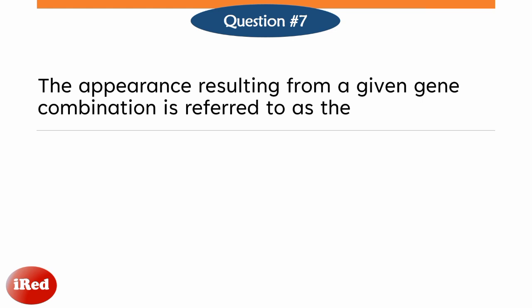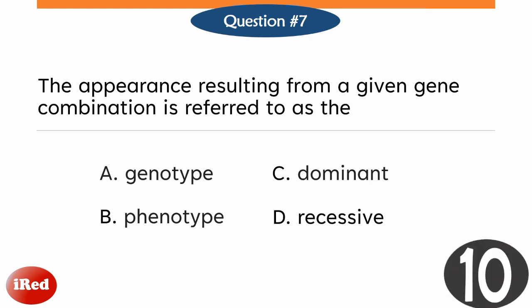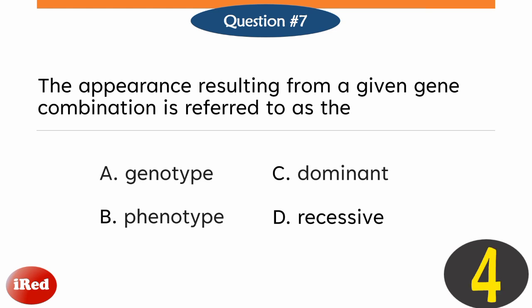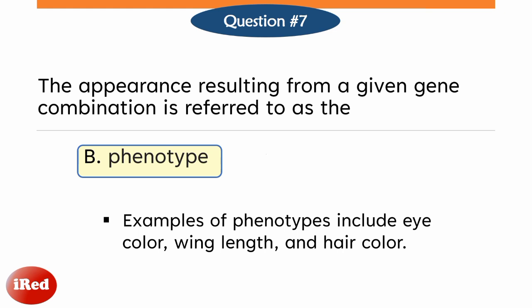The appearance resulting from a given gene combination is referred to as: A, genotype; B, phenotype; C, dominant; or D, recessive. The correct answer is letter B. The appearance resulting from a given gene combination is referred to as the phenotype. Examples: eye color, wing length, and hair color.